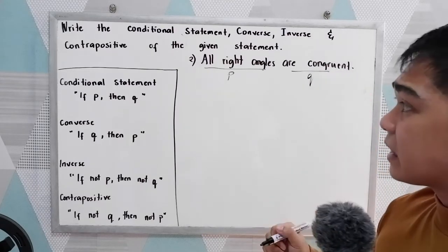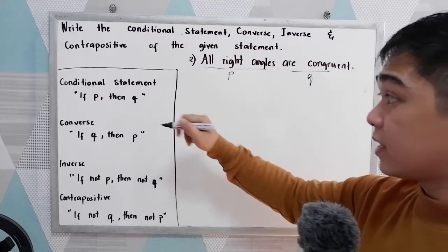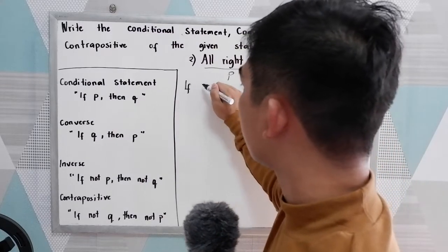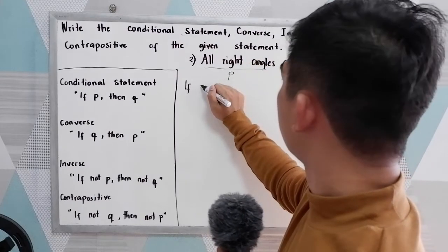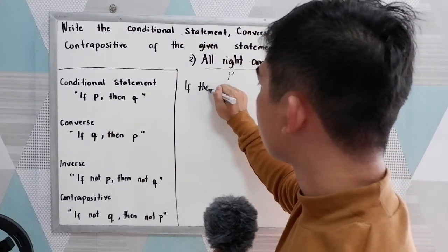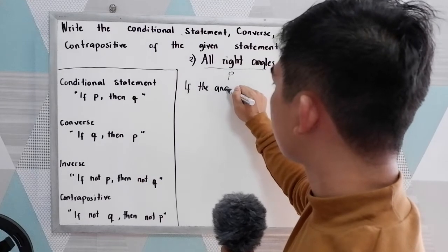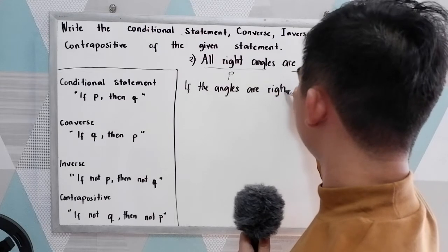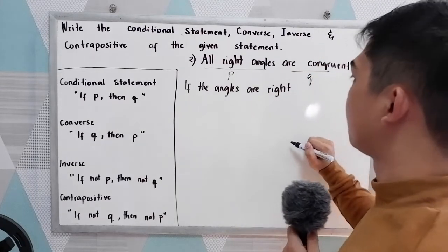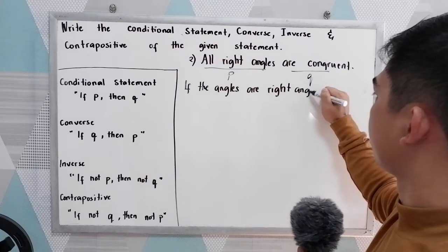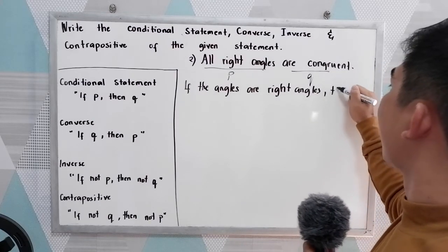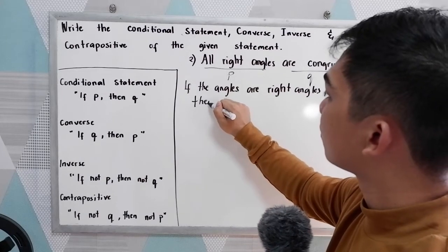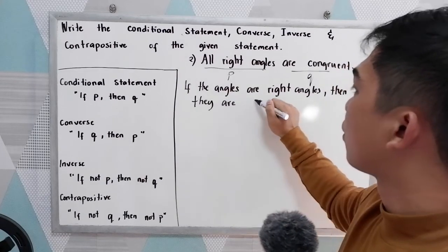Writing the conditional statement — if p then q: 'If the angles are right angles, then they are congruent.'